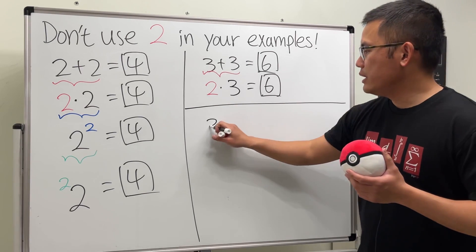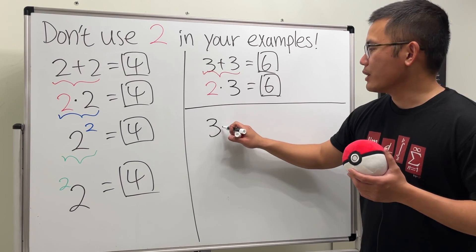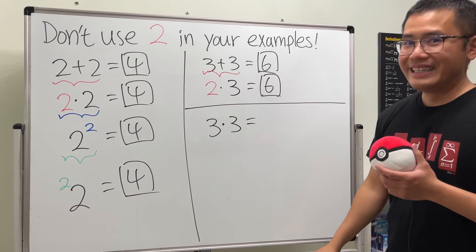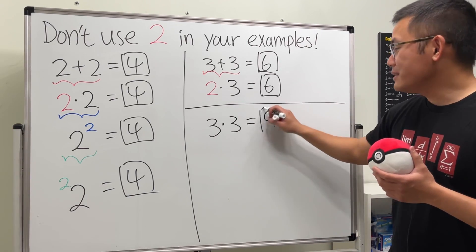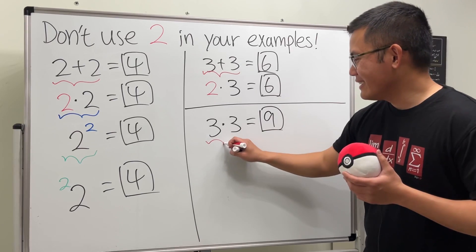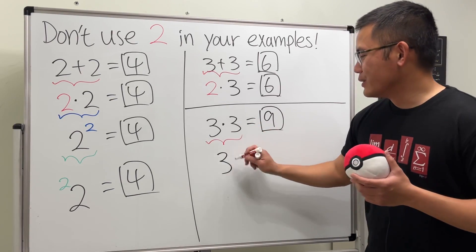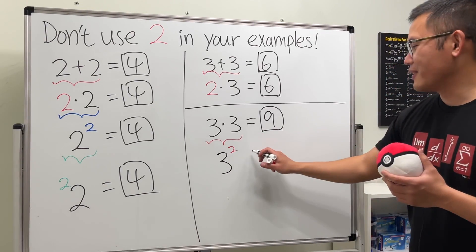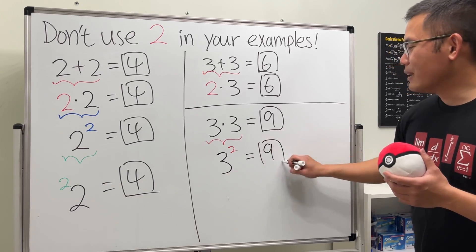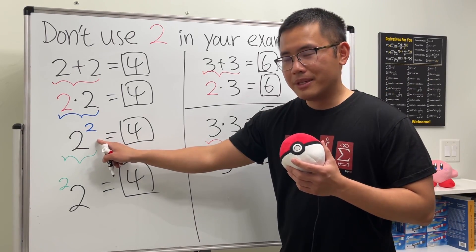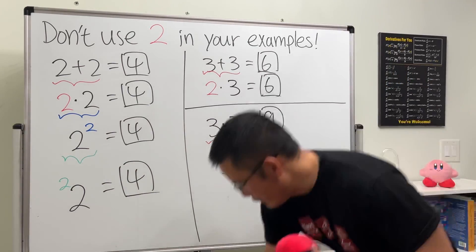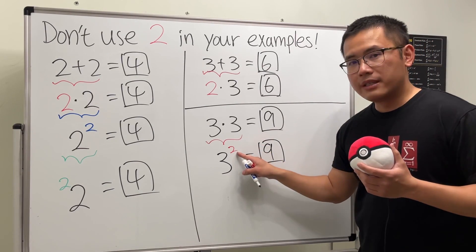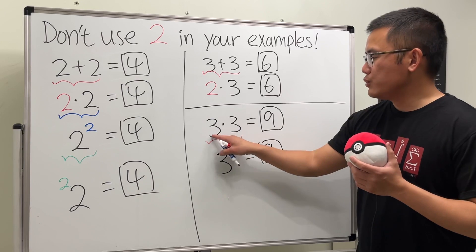But if you look at 3 times 3, that's a different example. 3 times 3 gives you 9, and we can express this using exponents: it's the same as 3 to the second power. This does not cause confusion — or at least it's much, much better — because 3 to the second power clearly means 3 times 3, which is 9.